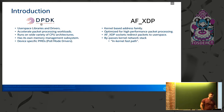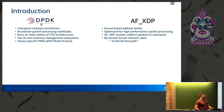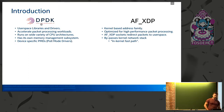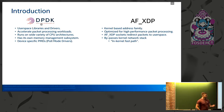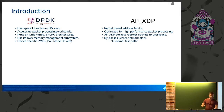AF_XDP is a kernel-based address family optimized for high-performance packet processing. AF_XDP has its own sockets in order to move packets from kernel space to user space, and it uses the in-kernel fast path, bypassing the network stack in order to move those packets quickly.